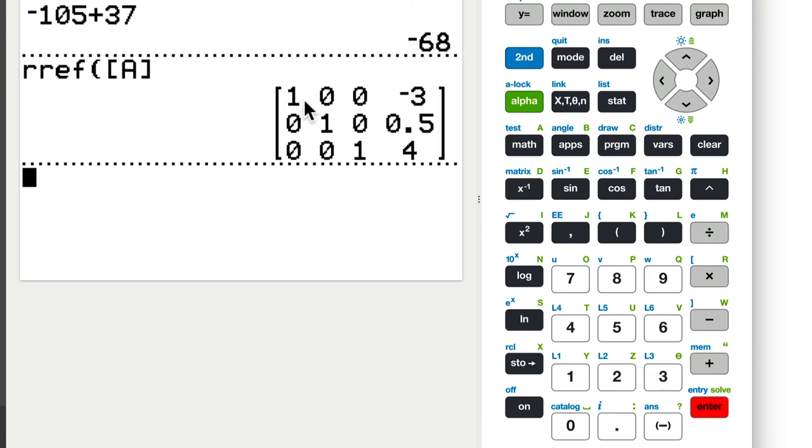So what this says is that 1 times A plus 0 times B plus 0 times C is negative 3. So in other words, 1A is negative 3, A is negative 3. And then likewise here, 0A, 1B, 0C add them together, and that's 1 half. So 1B is 1 half. And then finally, 1C is 4.